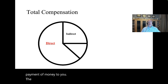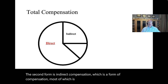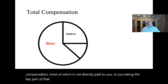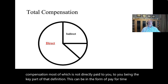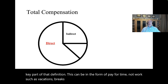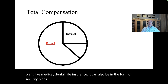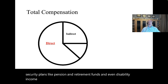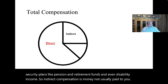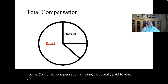The second form is indirect compensation, which is a form of compensation most of which is not directly paid to you. This can be in the form of pay for time not worked, such as vacations, breaks, and holidays. It can also be in the form of insurance plans like medical, dental, and life insurance, or security plans like pension and retirement funds, and even disability income. Indirect compensation is money not usually paid to you, but instead paid for you or on your behalf.